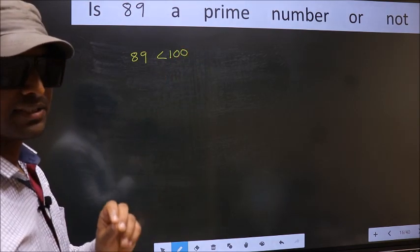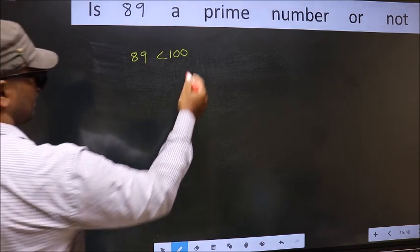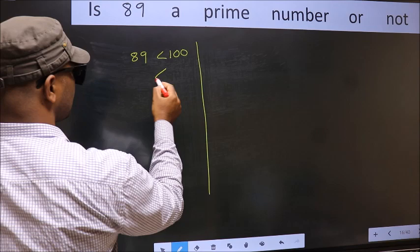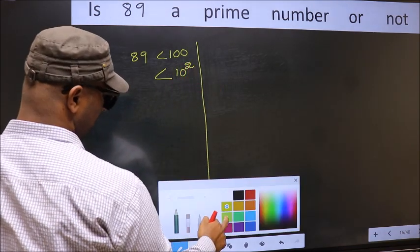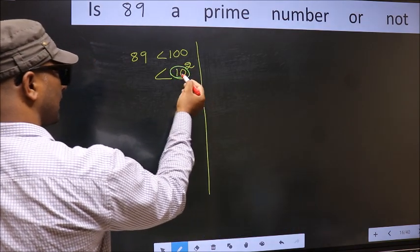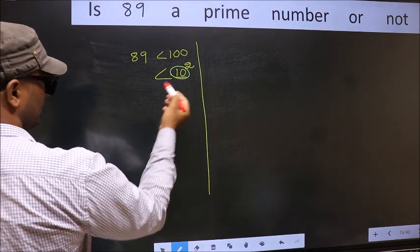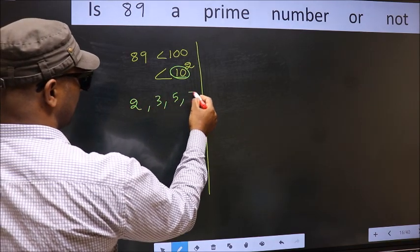This is your step 1. Next. 100 is nothing but 10 square. Now you write all the prime numbers less than this number 10. They are 2, 3, 5 and 7.